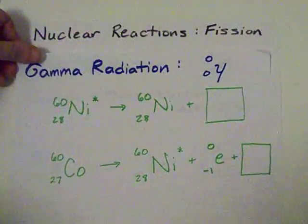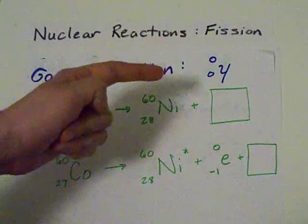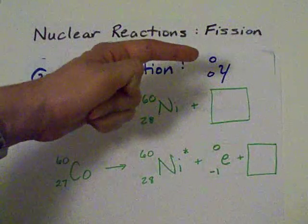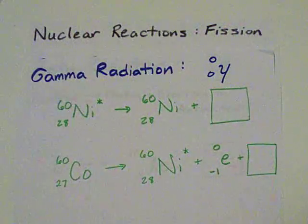Third kind, gamma radiation, which is like the easiest one of all because there's no change in mass. There's no change in protons. There's no change in neutrons. It's just light being given off.